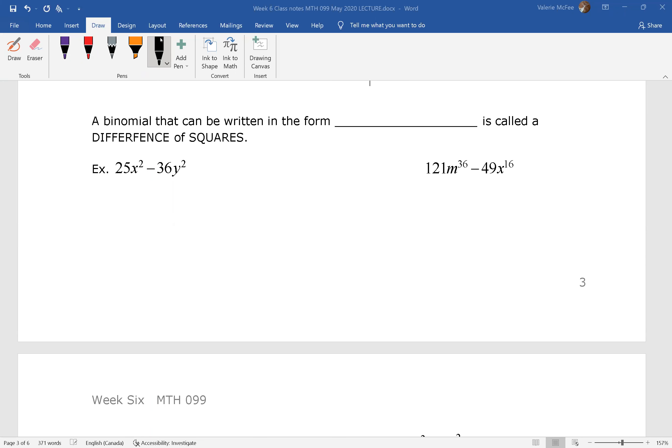So we looked at these binomials last week when we were talking about multiplying polynomials. We said if you have a binomial that can be written in the form a squared minus b squared, we have what is known as a difference of squares. A is squared, b is squared, and we are subtracting, so it is a difference.